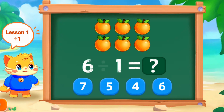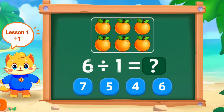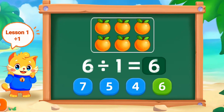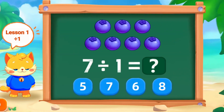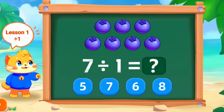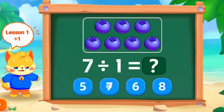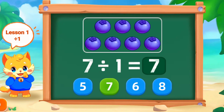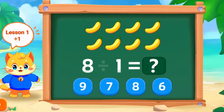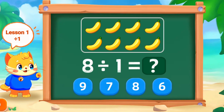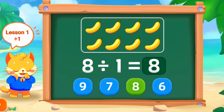6 divided by 1 is 6. Great job. 7 divided by 1 is 7. Good work. 8 divided by 1 is 8. Perfect.